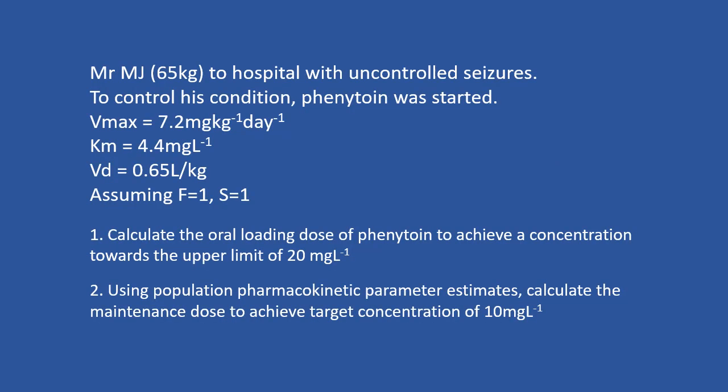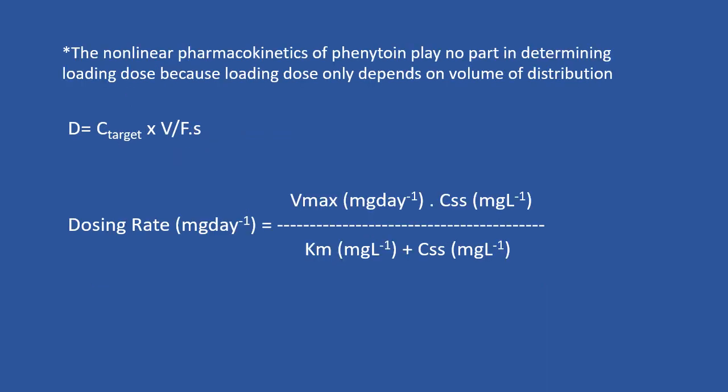In this question you need to calculate the oral loading dose, and then using population pharmacokinetic parameters, calculate the maintenance dose to achieve a concentration of 10 mg per liter. To calculate the loading dose, the non-linear pharmacokinetics of phenytoin play no part in determining the loading dose, because loading dose only depends on volume of distribution. Therefore you should use this equation, putting in the values and assuming F and S equal 1.